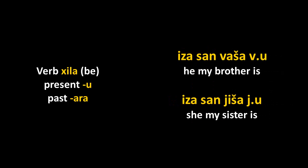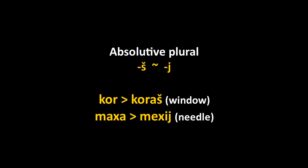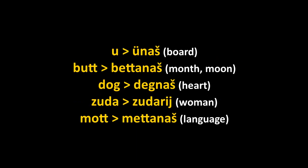To form the plural, Chechen typically uses the consonant -sh or similar endings. So kor is 'window,' koresh is 'windows.' Maha is 'needle,' mehi is 'needles.' You see there is also a vowel change in the middle of the word — that's the ablaut, similar to German. It's a very common process, actually far more complex in Chechen than it is in German.